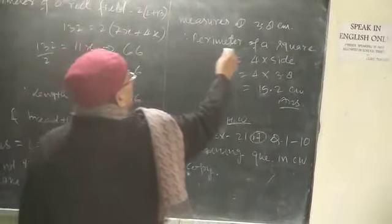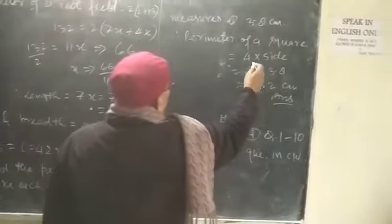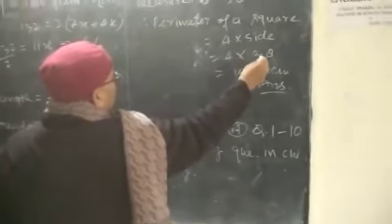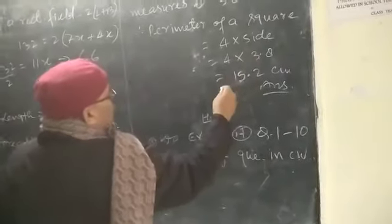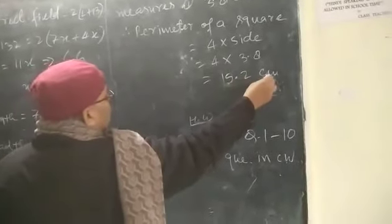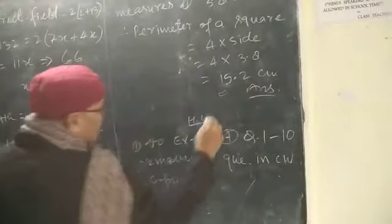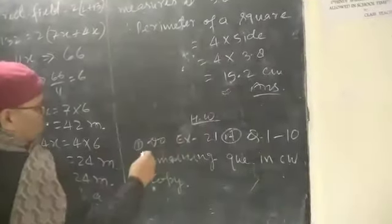Therefore, perimeter of square is equal to 4 into side. Therefore, 4 multiplied by 3.8, which will be equal to 15.2 cm, which is the correct answer.